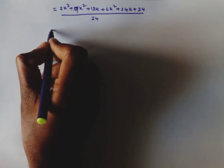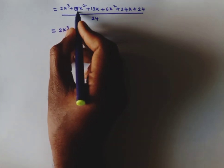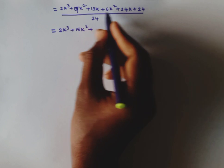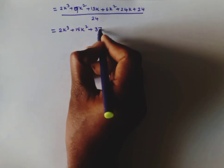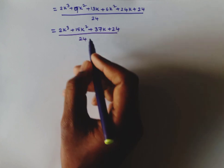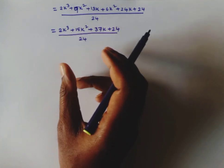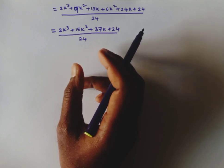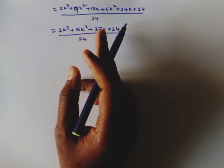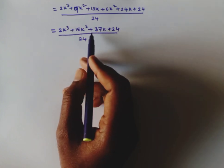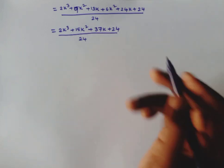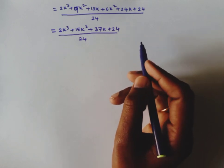Expanding: k(2k²+9k+13) + 6(k²+4k+4) = 2k³ + 9k² + 13k + 6k² + 24k + 24 = 2k³ + 15k² + 37k + 24, all divided by 24. Now we need to factorize this cubic expression. Since it is a cubic polynomial, we use the synthetic division method.